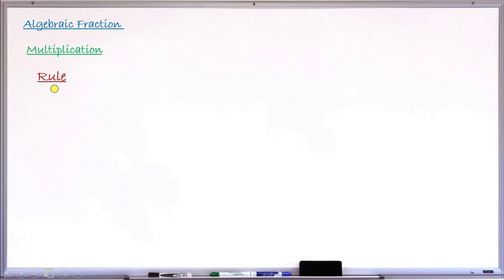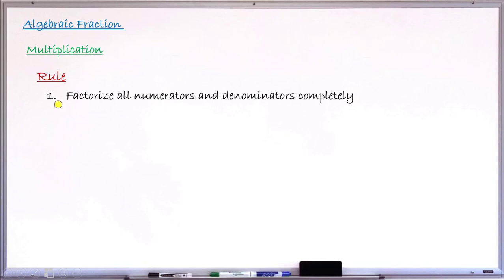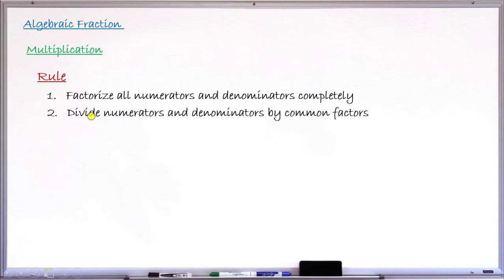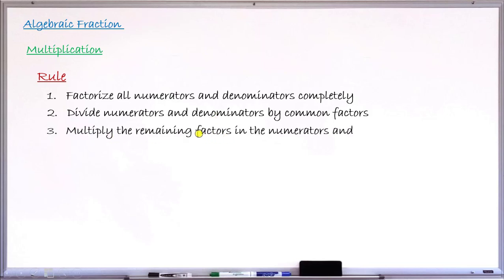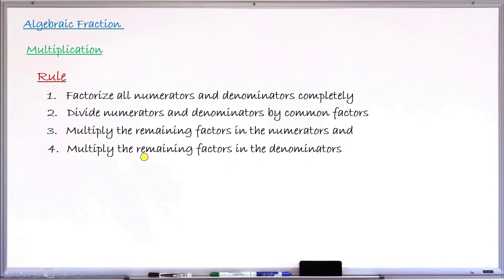To begin the lesson, let us first learn the rule that will guide us. Rule number one: factorize all the numerators and all the denominators completely. Step two: divide the numerator and denominator by any common factors found after factorizing. Step three: multiply the remaining factors at the numerator level. Step four: multiply the remaining factors at the denominator level. These are the four steps to multiply two algebraic fractions successfully.